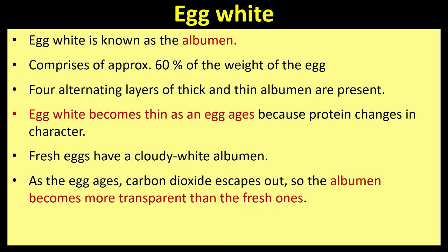Egg white is known as albumin, and comprises approximately 60 percent of the weight of the egg. Four alternating layers of thick and thin albumin are present. Egg white becomes thin as an egg ages because protein changes its character. Fresh eggs have a cloudy white albumin; as the egg ages, carbon dioxide escapes and the albumin becomes more transparent.